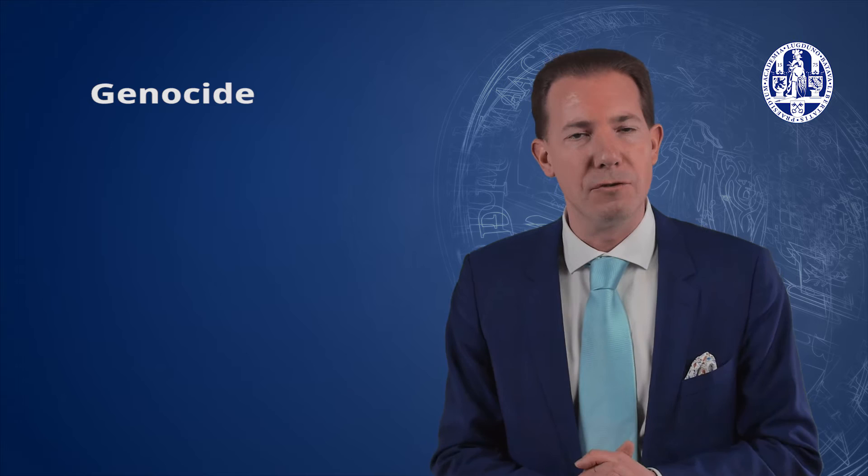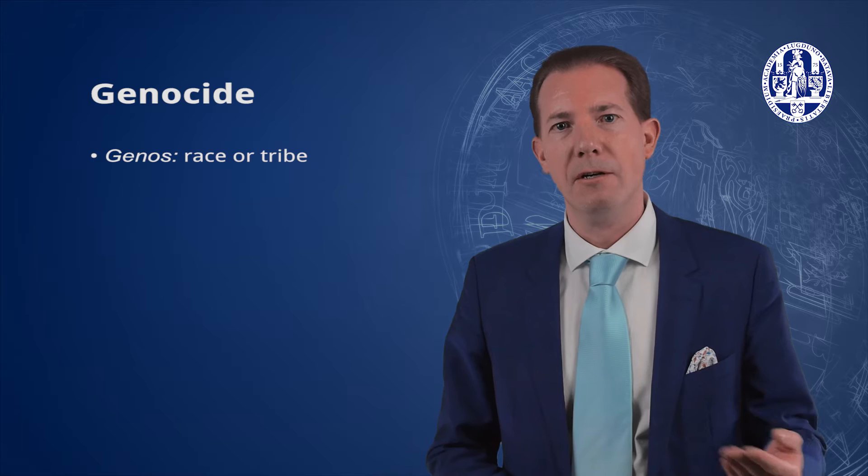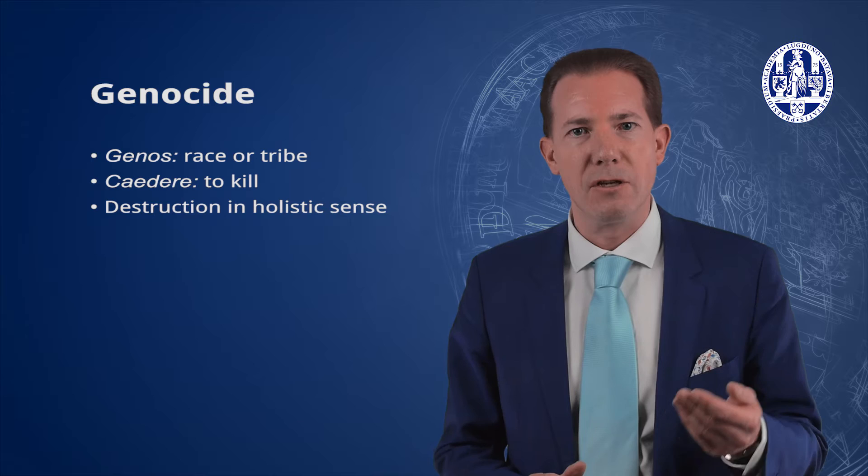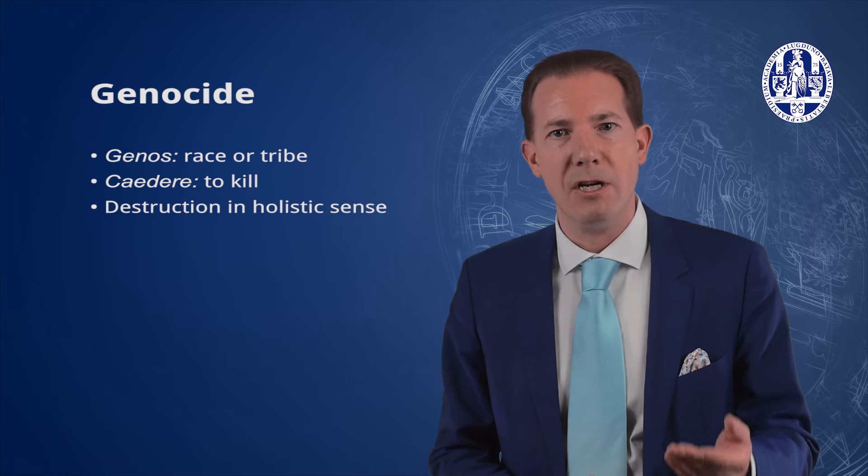The term genocide was first officially used in 1944 by the Polish-Jewish lawyer Raphael Lemkin. Lemkin had witnessed the Holocaust and used the word genocide to describe the destruction of the essential foundations of the life of Jews in Eastern Europe. The word is composed of the term genos, which means race or tribe, and caedere, which means to kill. Lemkin referred to destruction in a holistic sense, which included destruction of political and social institutions, culture, language, national feelings, religion, and even economic existence.